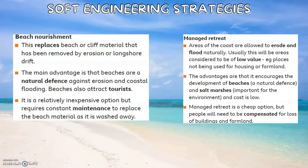Soft Engineering Strategies. The first is beach nourishment. This replaces the beach or cliff material that has been removed by erosion or longshore drift. The main advantage is that beaches are a natural defence against erosion and coastal flooding, as well as being a tourist attraction. It is relatively inexpensive, but does require constant maintenance to replace the beach material as it is washed away.